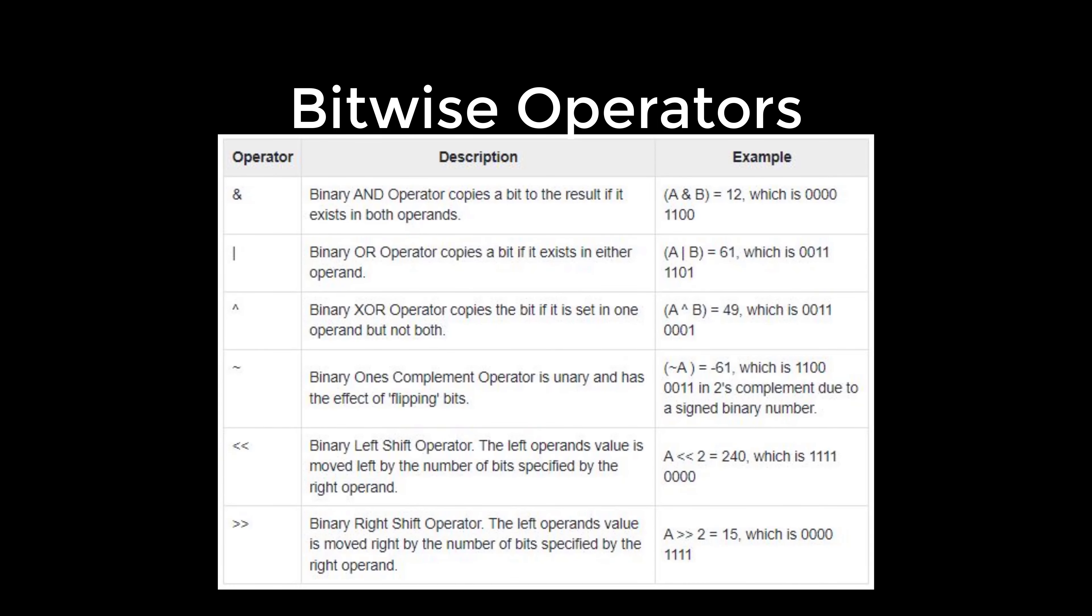So here is AND and OR and binary NOT, or binary ones complement operator, which is unary and has the effect of flipping bits. Another one is binary left shift operator, and also there is a binary right shift operator.